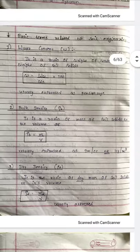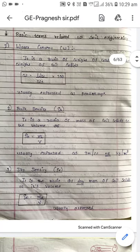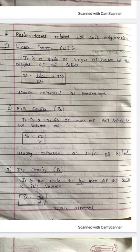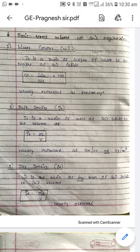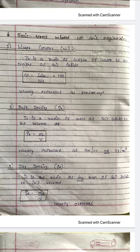This is nothing but a three-phase diagram. In some cases, the soil is completely dry and it can be a two-phase system — that is air and soil solid. If the soil is completely saturated, it is also a two-phase system — water and soil solid. We can draw either a two-phase or three-phase diagram.